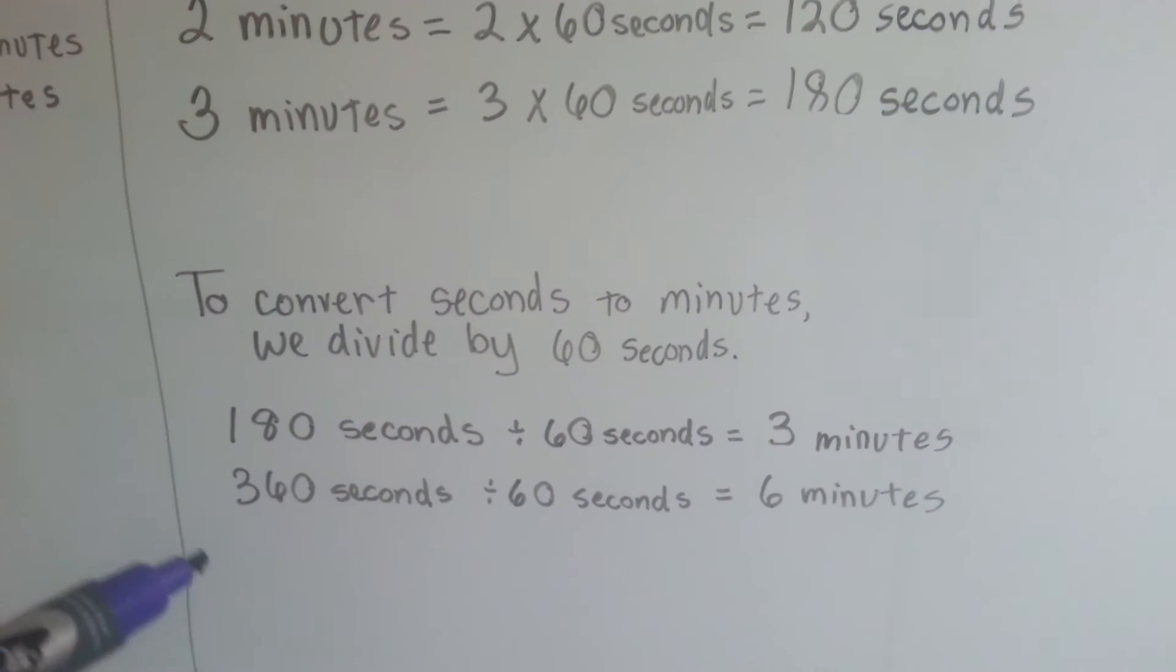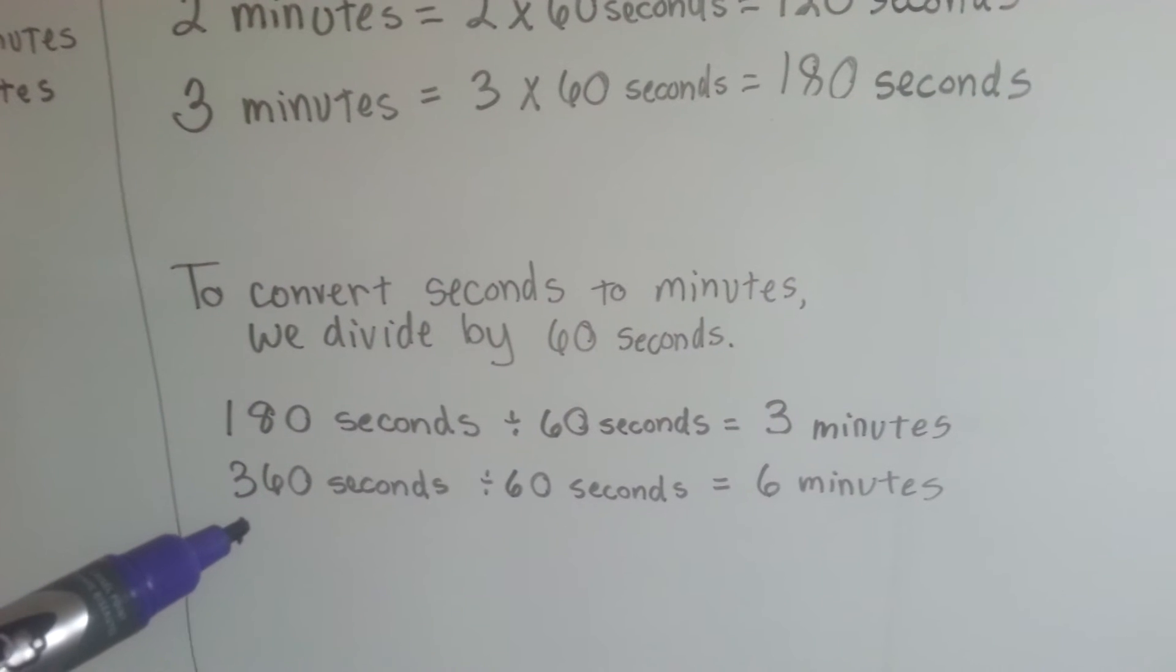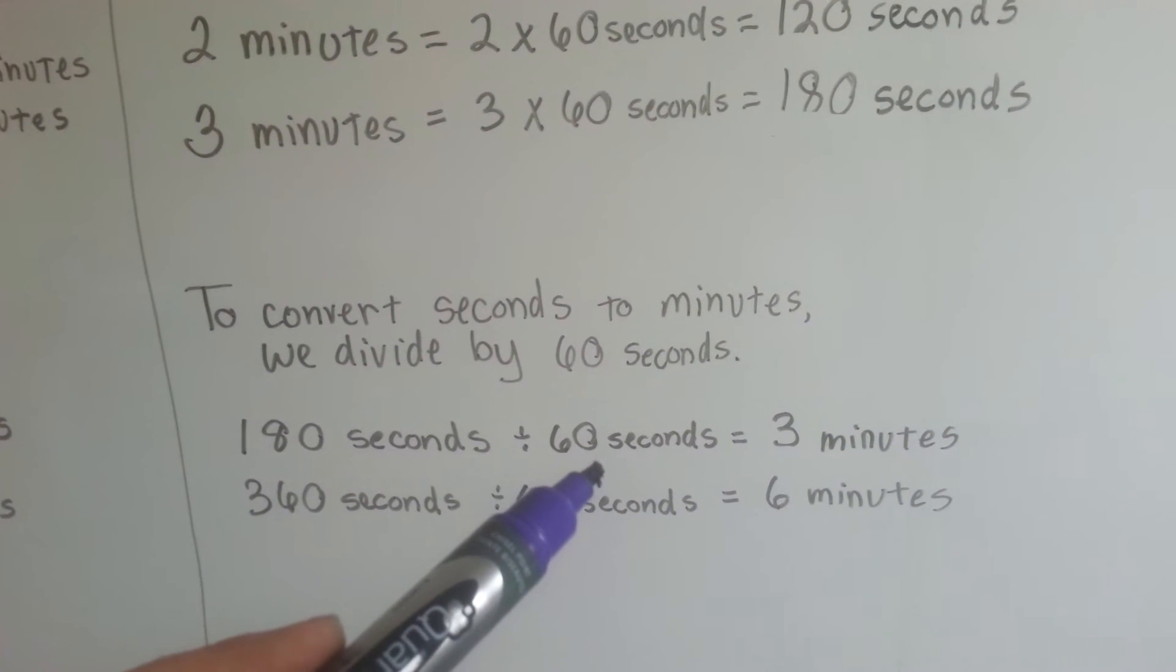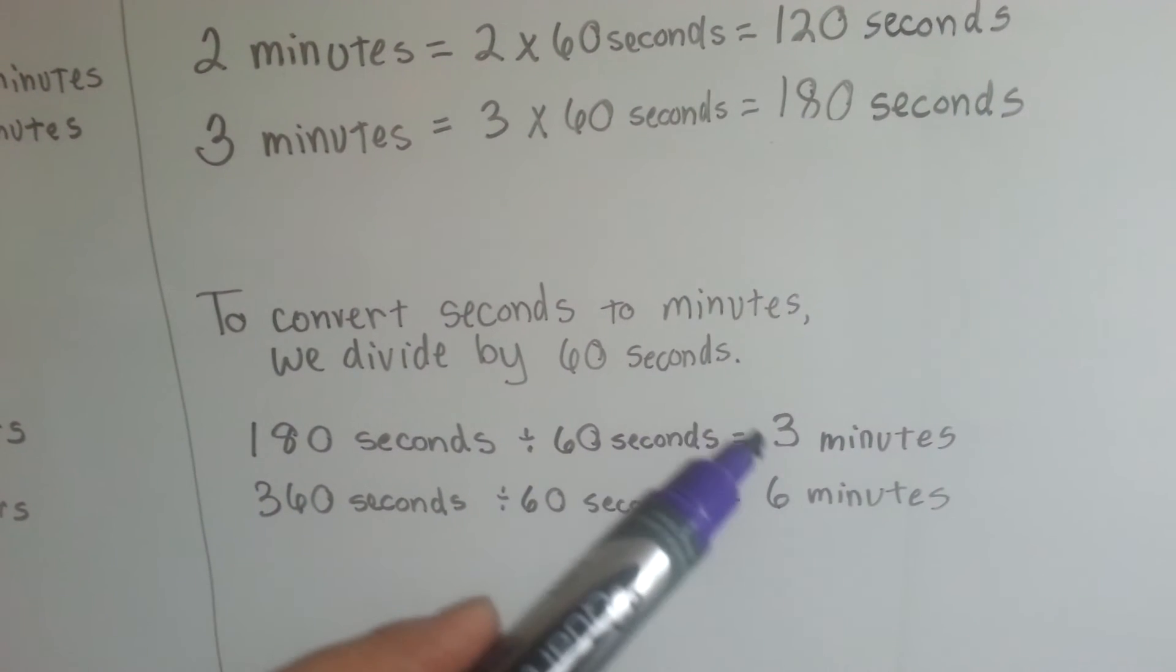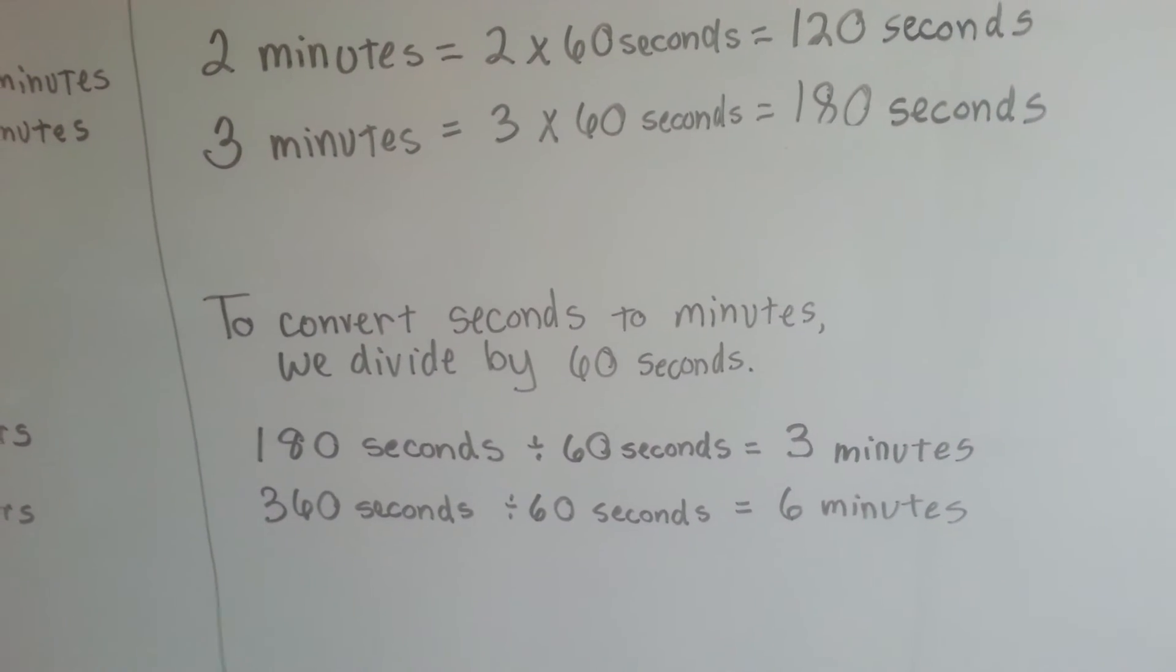And we can flip it around and convert seconds to minutes by dividing by 60 seconds. 180 seconds divided by 60 seconds is 3 minutes, because there's 60 seconds in each minute. 360 seconds divided by 60 seconds would be 6 minutes.